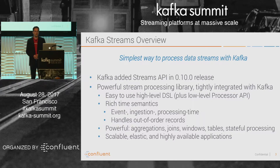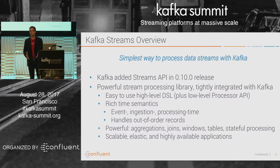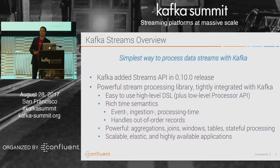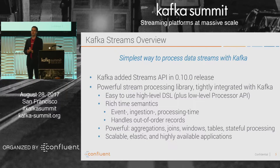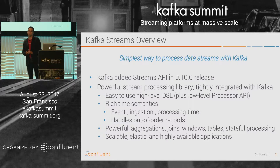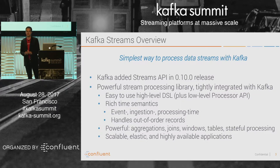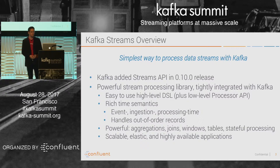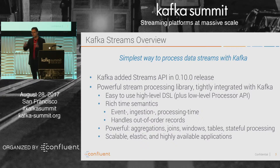Kafka Streams has very rich time semantics — we support event time, ingestion time, and processing time, and we're also able to handle out-of-order records, which is of course pretty important. As you may know, Kafka itself has strict ordering guarantees, but those are based on offset. For handling event time, it's important to be able to handle out-of-order data based on timestamp, and that is not something Kafka itself guarantees — but Kafka Streams adds that on top.